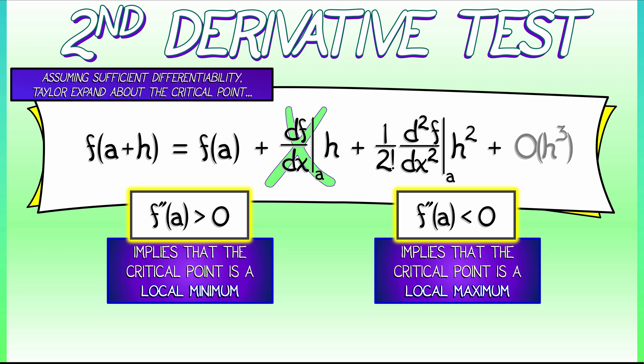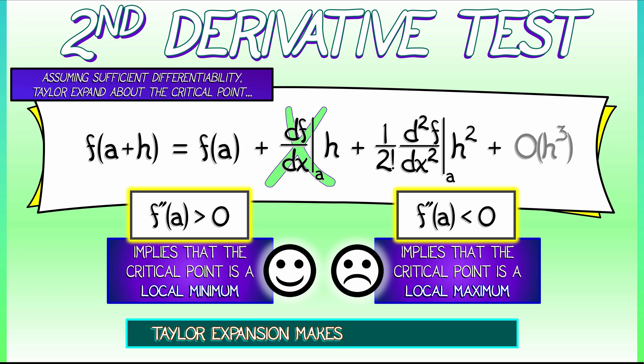Gee, how are we going to remember those two criteria? Positive, minimum, negative, maximum? The point is that Taylor expansion makes all of this clear. And if this was something that you just memorized in the past, now you don't need to just memorize this as some random test. It is fully sensible and comes straight from a Taylor expansion.